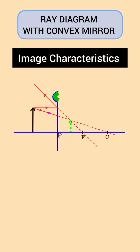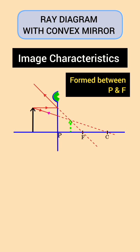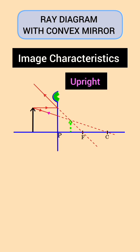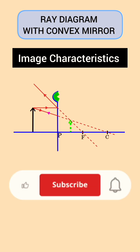The characteristics of the image are: the image is virtual, the image is formed between the pole and the principal focus, the image is diminished, and the image is upright.